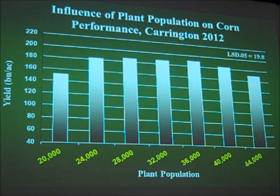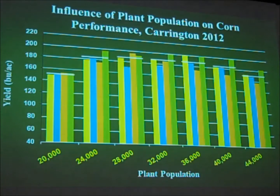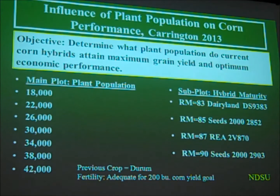Last year at Prop State here at Carrington, I showed this particular graphic. We had seven plant populations going from 20,000 to 44,000 plants per acre. As this graphic demonstrates, we did not have any significant differences between our 24,000 up to our 40,000 plant population. The low end and high end were actually significantly less yielding than the others. We had four hybrids within that trial, ranging from 83 to 90-day hybrids, and regardless of the relative maturity of hybrids selected, they all trended to respond in a similar fashion.